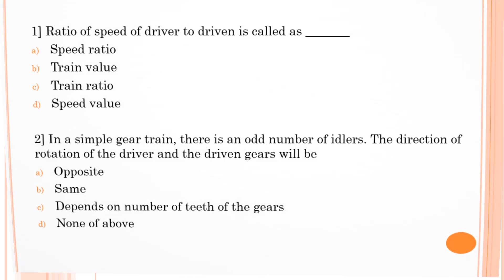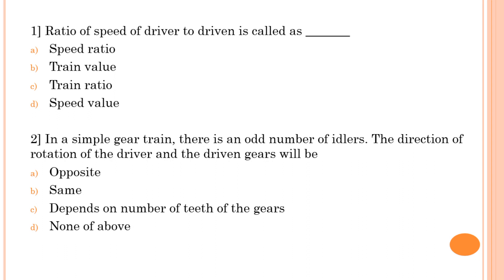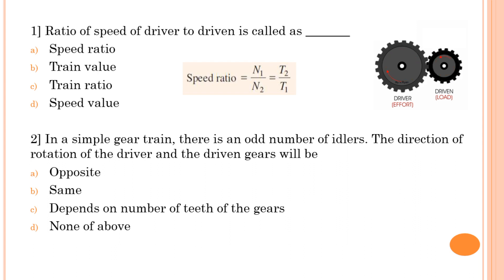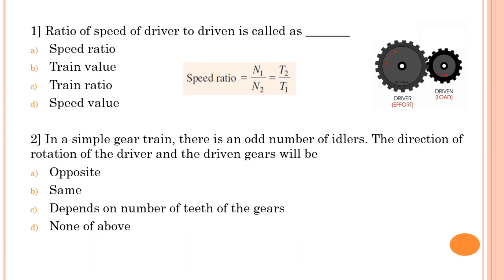The first question: the ratio of speed of driver to driven is called — options are speed ratio, train value, train ratio, or speed value. In a simple gear train, the speed ratio is speed of driver divided by speed of driven. The train value is exactly opposite — it is the ratio of velocity of driven to velocity of driver gear. Therefore the answer is A: speed ratio.